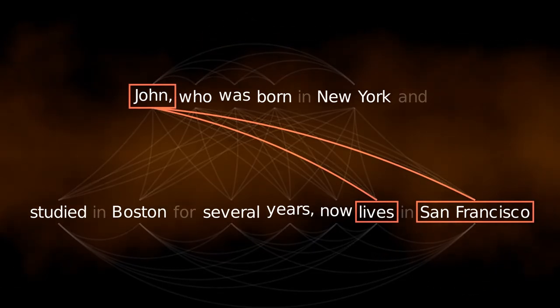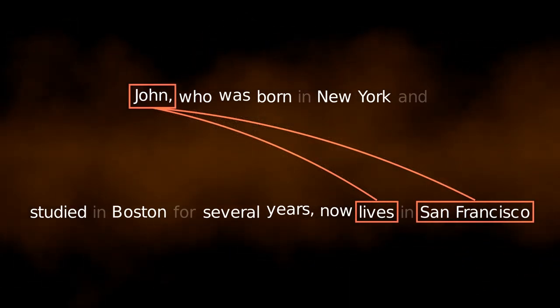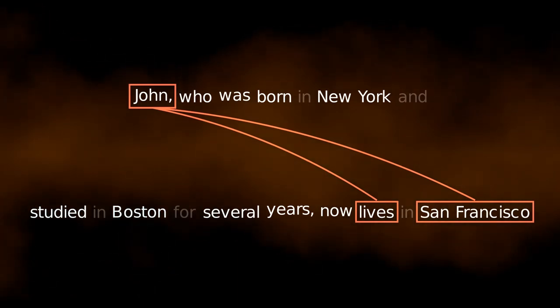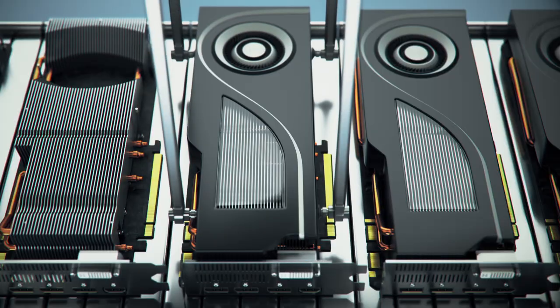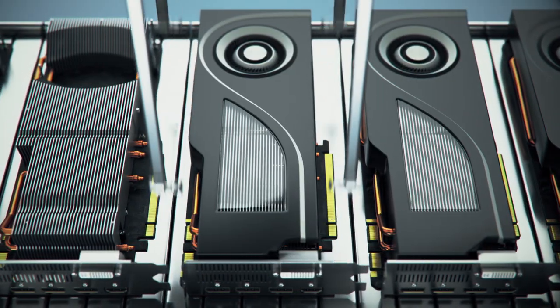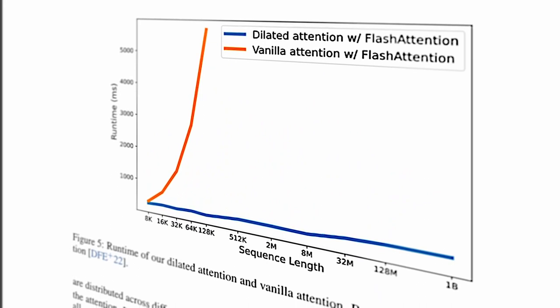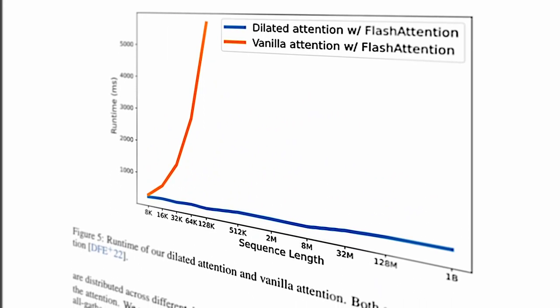The problem is, it's a lot of math. It has to do this for every word to every other word, which creates a matrix of numbers where even more math has to happen. GPUs can run this math in parallel, but as the input length rises, the complexity rises at a quadratic rate — and this has enormous consequences.